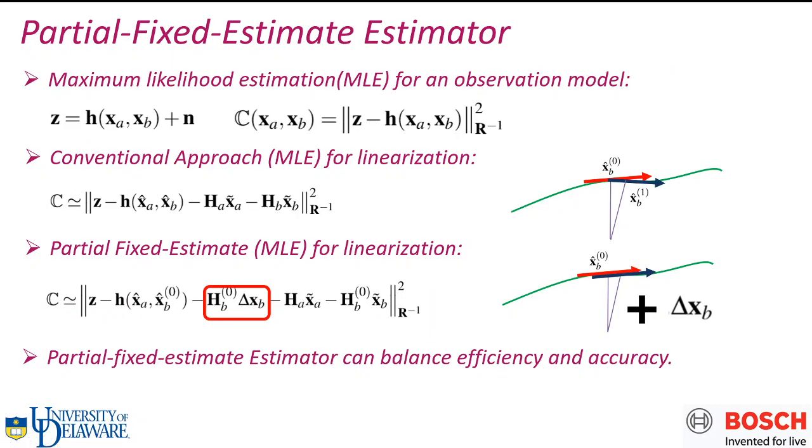How to solve this one? Assume that we have a general observation model with two variables, XA and XB. After formulating it in a least square form, most cases, the conventional solution is to use Gauss-Newton, by iteratively linearizing and solving it. In each linearization, we will recompute the HA and HB.